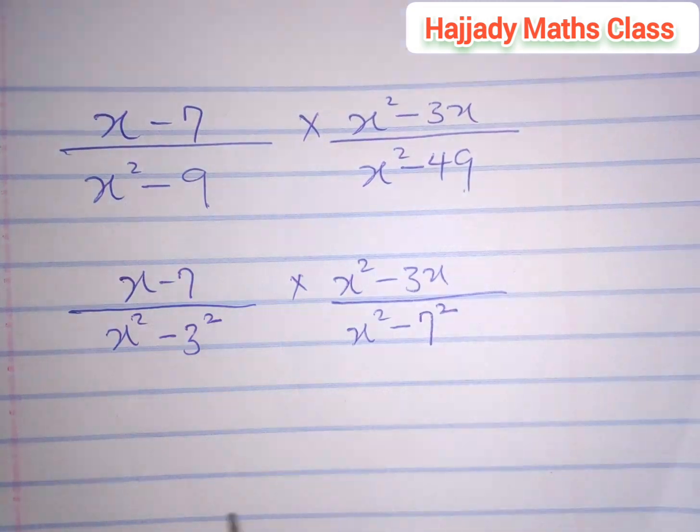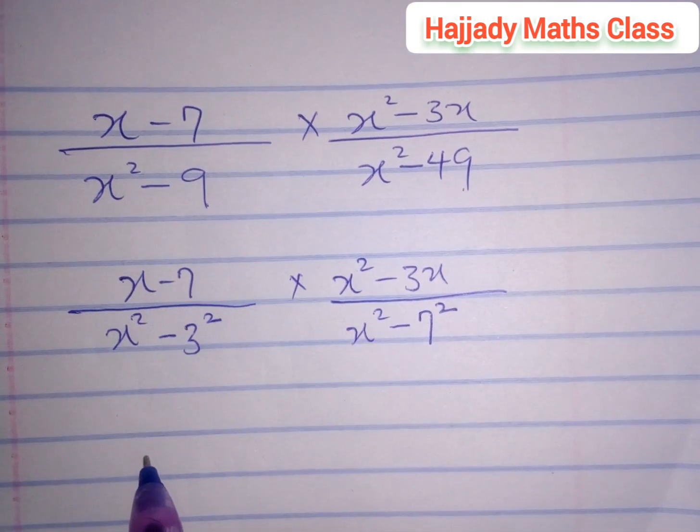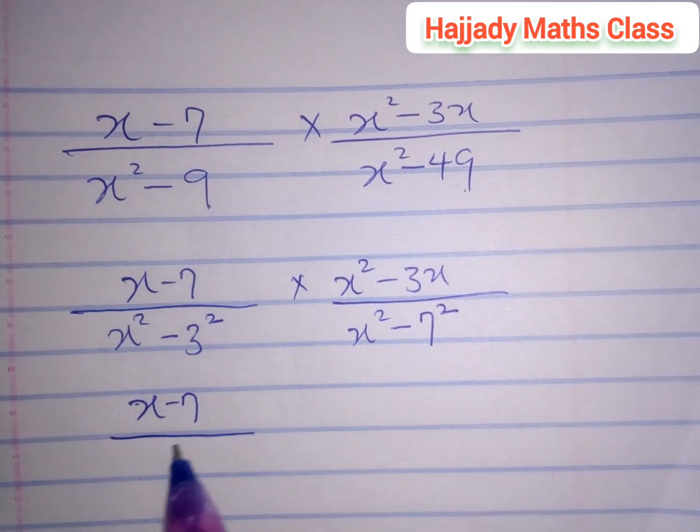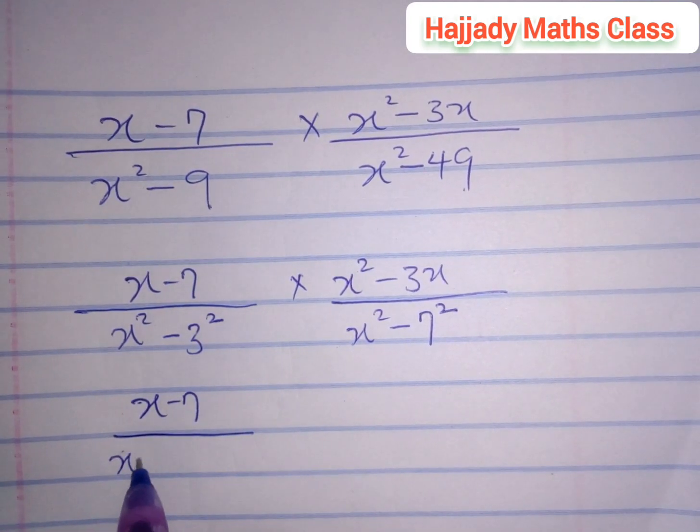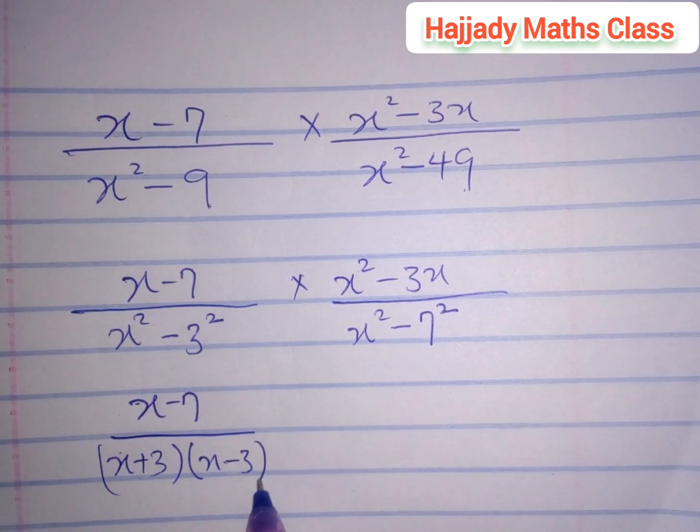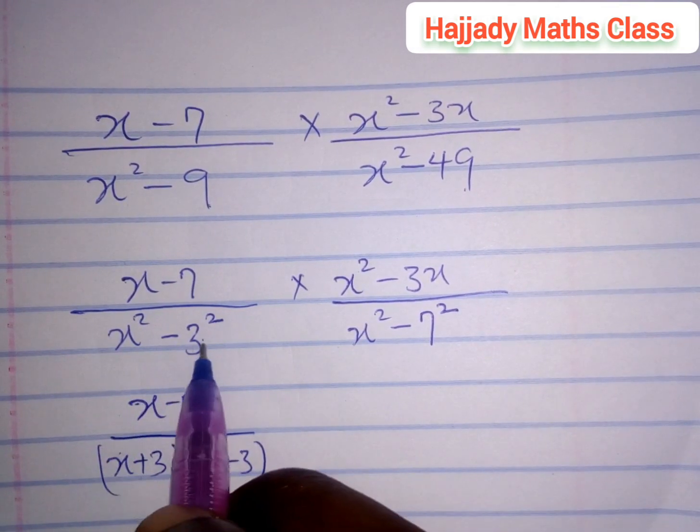Now let's proceed with this. Using the basic knowledge of difference of two squares, here we have (x - 7) divided by (x + 3)(x - 3). We take the addition and subtraction of the two, multiplied by...